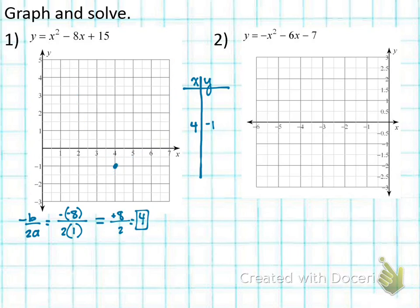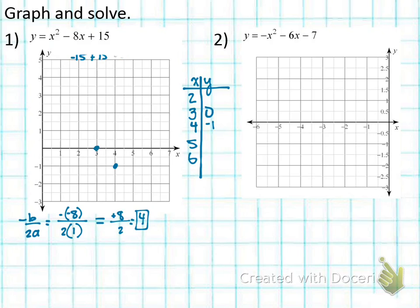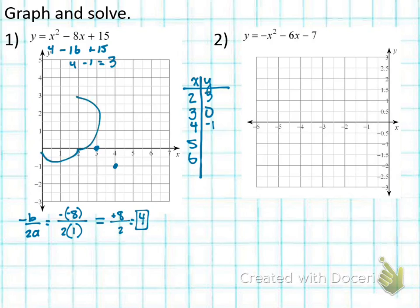Since it's going to open up, I'm going to pick a couple of adjacent points from four — we'll pick five and six, and three and two — and we want to plug them in. First, let's look at x equals three: three squared is nine, negative eight times three is negative twenty-four, plus fifteen. Nine minus twenty-four is negative fifteen, and negative fifteen plus fifteen is zero. So we put (3, 0). Next, for x equals two: two squared is four, negative eight times two is negative sixteen, plus fifteen. Negative sixteen plus fifteen is negative one, so four minus one equals three. So (2, 3) is another point.